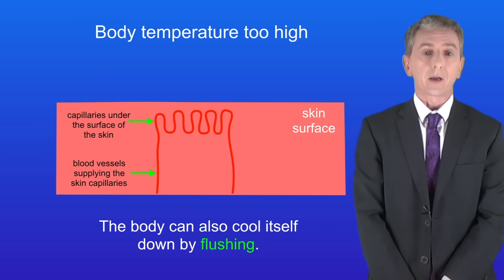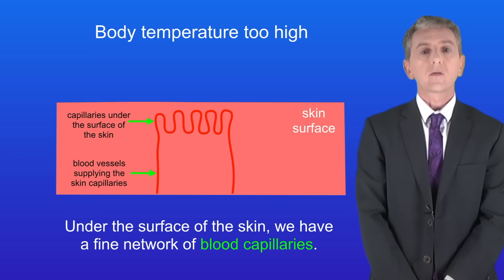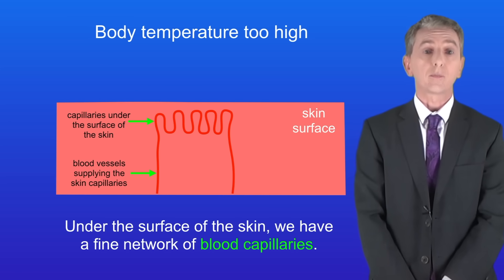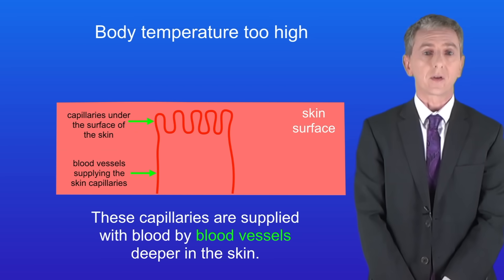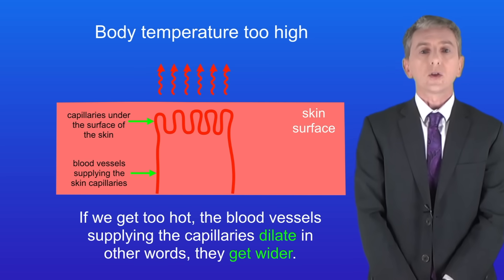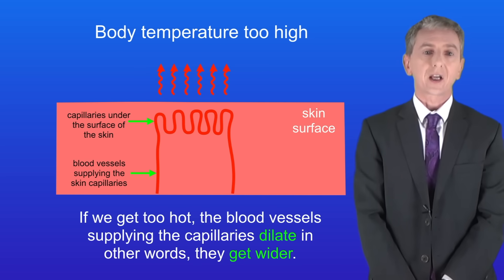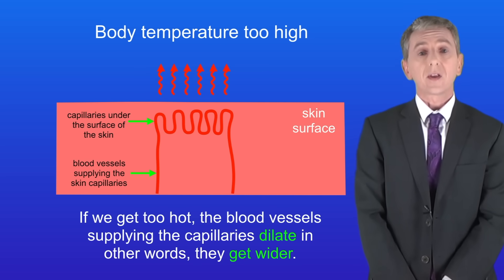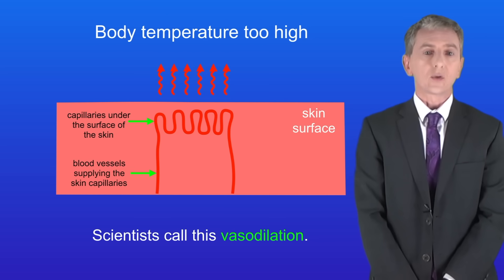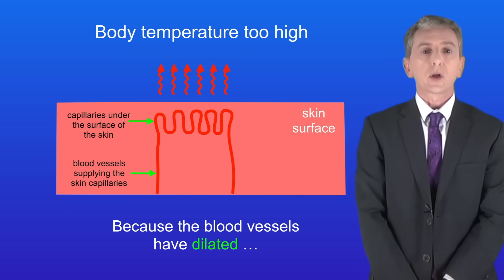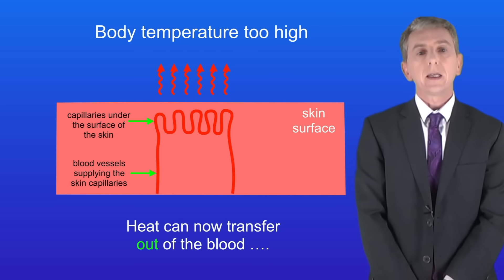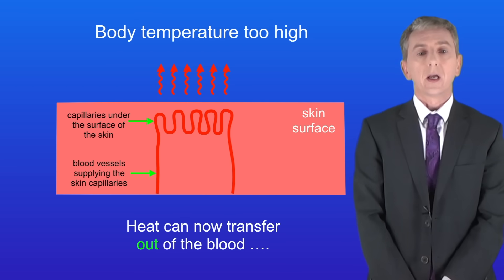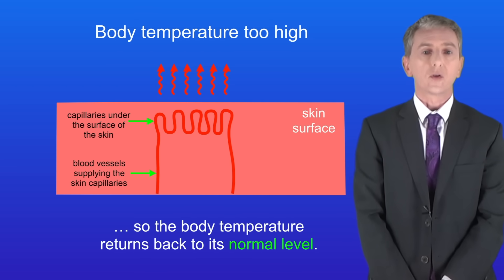The body can also cool itself down by flushing. Under the surface of the skin we have a fine network of blood capillaries, which are supplied with blood by blood vessels deeper in the skin. If we get too hot, the blood vessels supplying the capillaries dilate — in other words they get wider. Scientists call this vasodilation, and that's a word you need to learn. Because the blood vessels have dilated, more blood flows through the capillaries and heat can transfer out of the blood, so the body temperature returns back to its normal level.